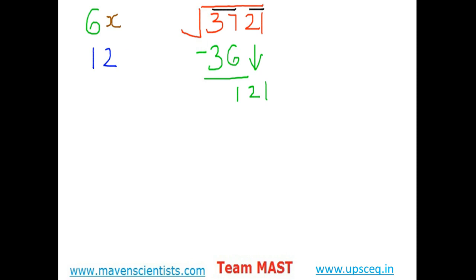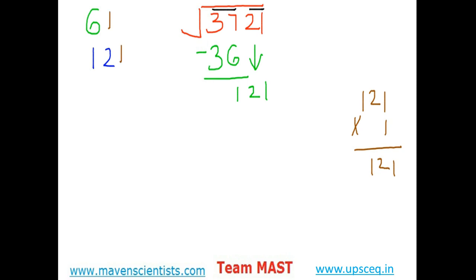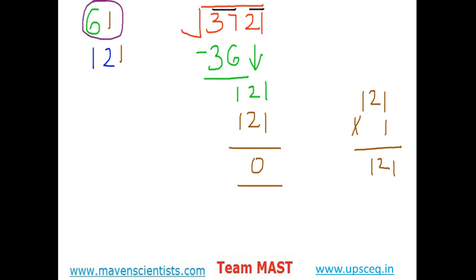The next step was to double the previous guessed number. Previous guessed number was six, so two times six is 12. The final step: guess the number x which when multiplied with 12x gives the answer less than or equal to 121. If we guess x to be one, 121 times 1 is exactly 121. The remainder comes out to be zero, which simply means 61 is the perfect square root of 3721.